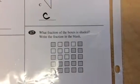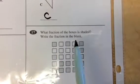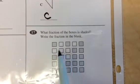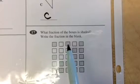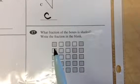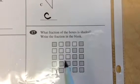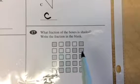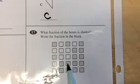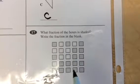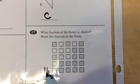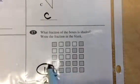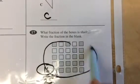Lots of you are asking me about this one. What fraction of the boxes is shaded? Write the fraction in the blank. We have to count all the boxes and then the ones that are just shaded. So 1, 2, 3, 4, 5. So I can count by fives. 5, 10, 15, 20, 25. And all of them are 25. But how many are shaded? 1, 2, 3, 4, 5, 6, 7, 8, 9, 10, 11, 12, 13, 14, 15, 16 out of 25 are shaded, okay? The shaded part goes on the top. All of them go on the bottom, okay?